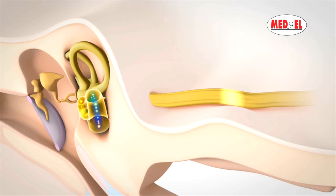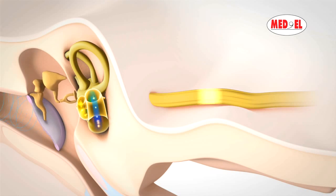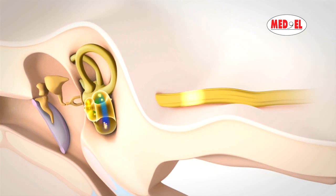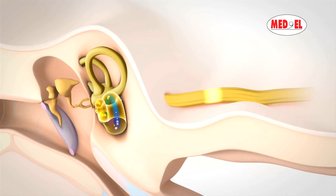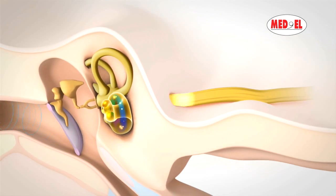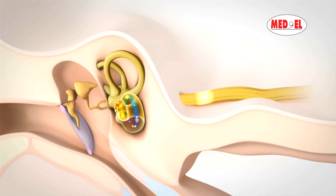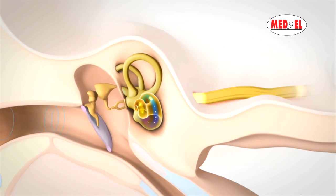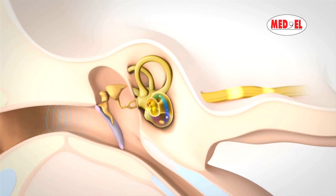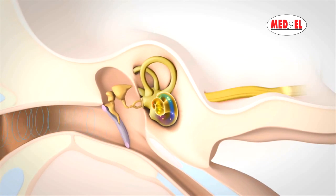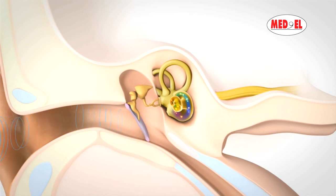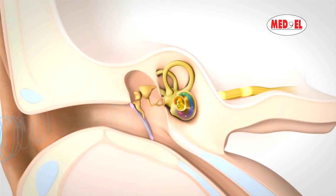The entire chain of events, including the various steps that convert sound waves from the environment into information that the brain can interpret, happens so fast that individuals can hear sound both continuously and instantaneously. Within this complex chain of events, there are a number of factors which can cause an individual to experience hearing loss.